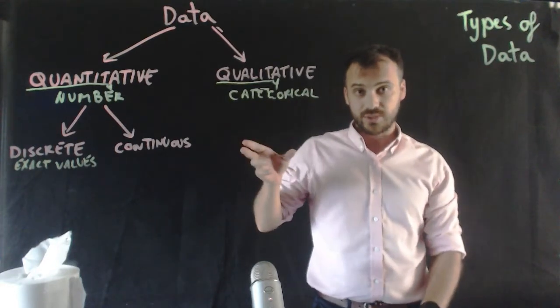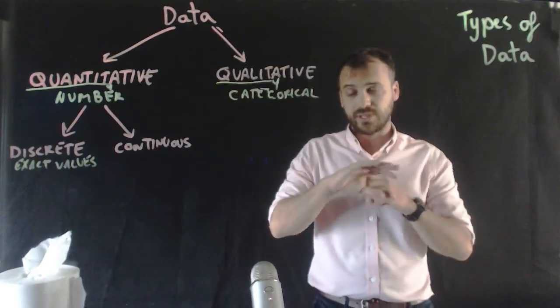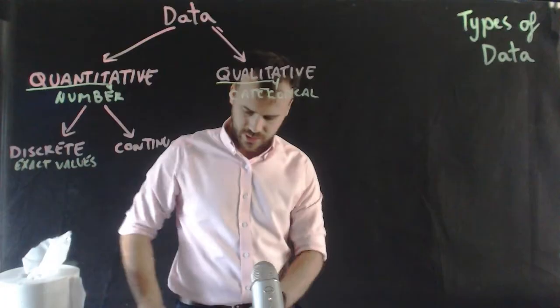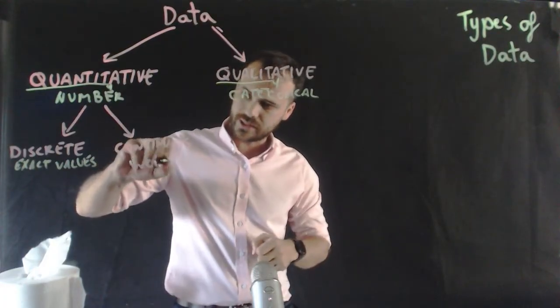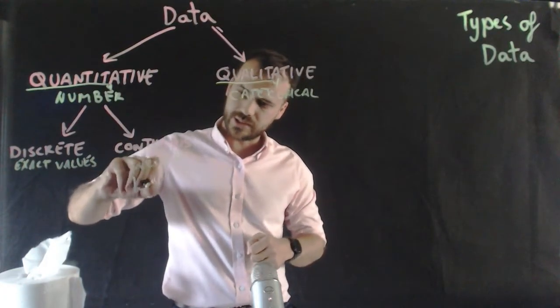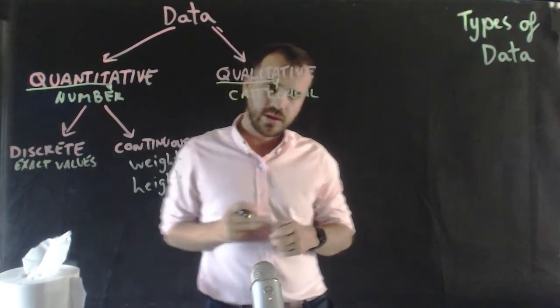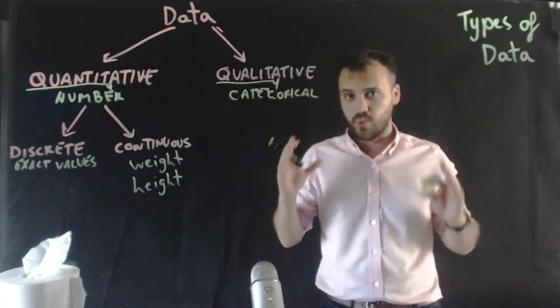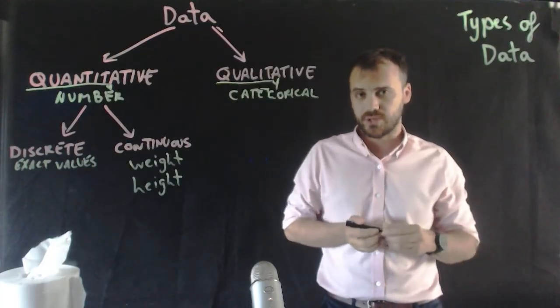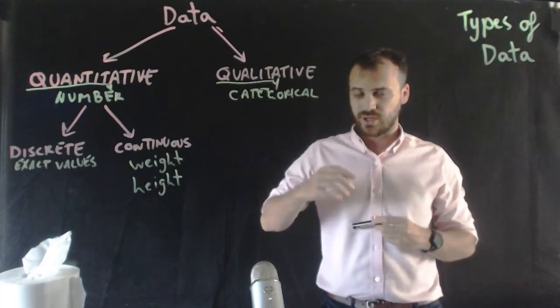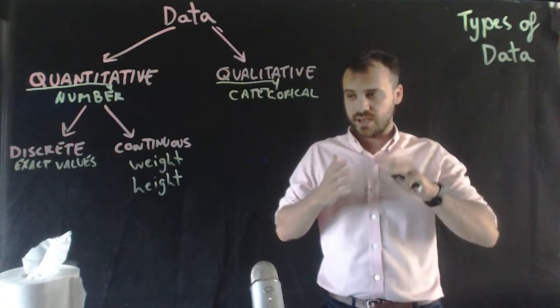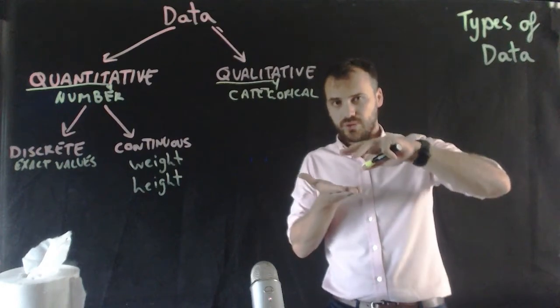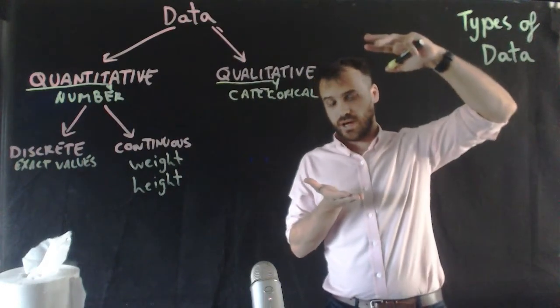Now, if we compare that to continuous, continuous can take absolutely any value. So let's think about a person's weight or height. Now, you can have an infinity of different weights or heights for a person. So I know this might blow your mind a little bit, but you've been every single height from birth up until what you are right now.